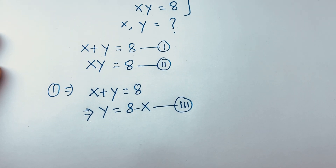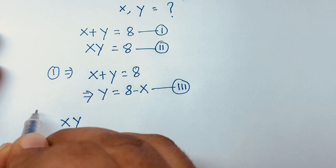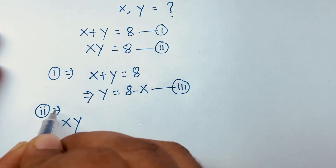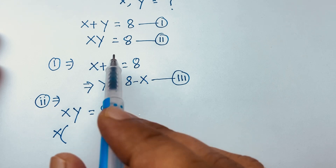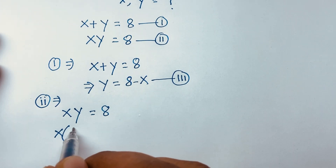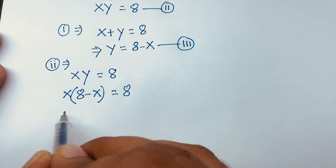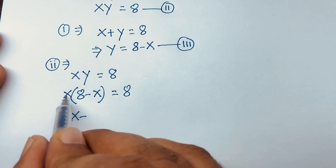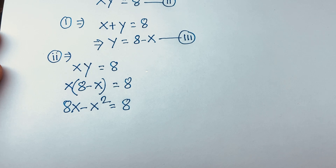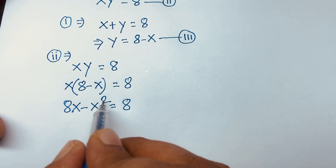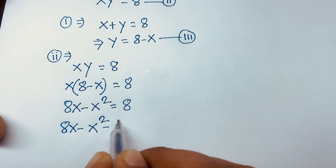Our second equation is x y is equal to 8. Substituting y equals 8 minus x, we get x times (8 minus x) is equal to 8. So 8 minus x is equal to 8. This equation becomes 8x minus x squared minus x is equal to 8, which gives us 8x minus x squared minus 8 is equal to 0.